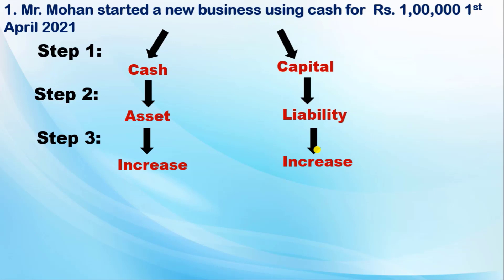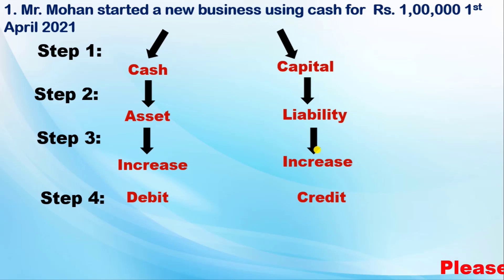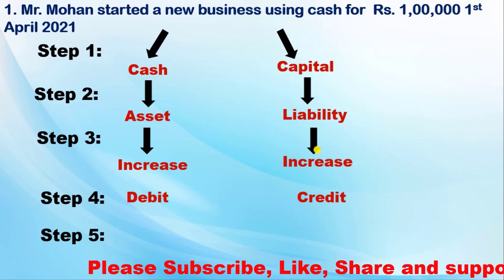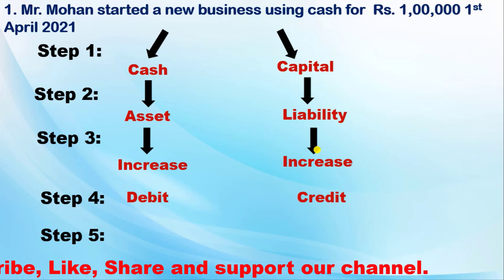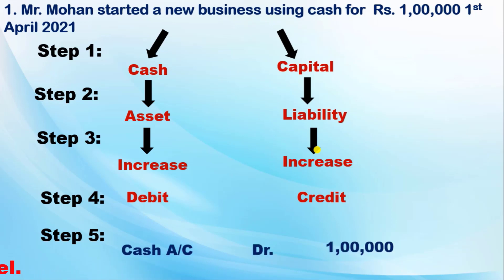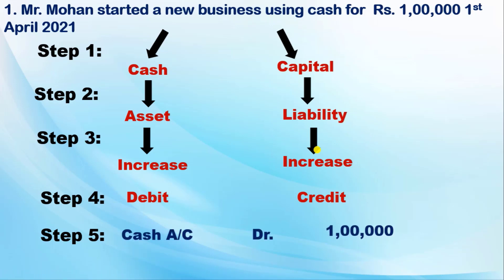Step 4: if your assets increase, you always debit; if your liabilities increase, you always credit. After these four steps, step 5 gives you the complete journal entry. So here, cash increases, so you debit cash account 1 lakh, and credit capital account 1 lakh. This is how you follow these steps, and all journal entries will be done this way — it will be very simple for you.